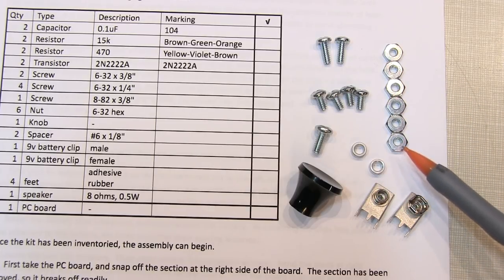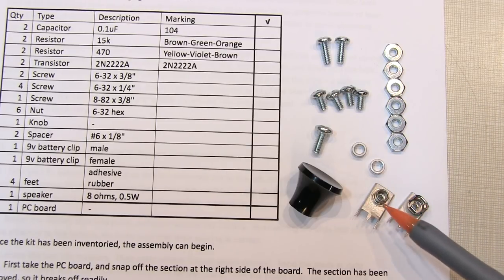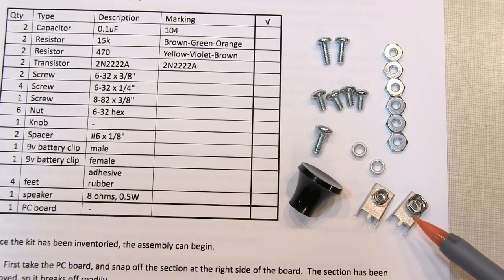You should have six hex nuts, two spacers, the male and female 9-volt battery clips, and the plastic knob.